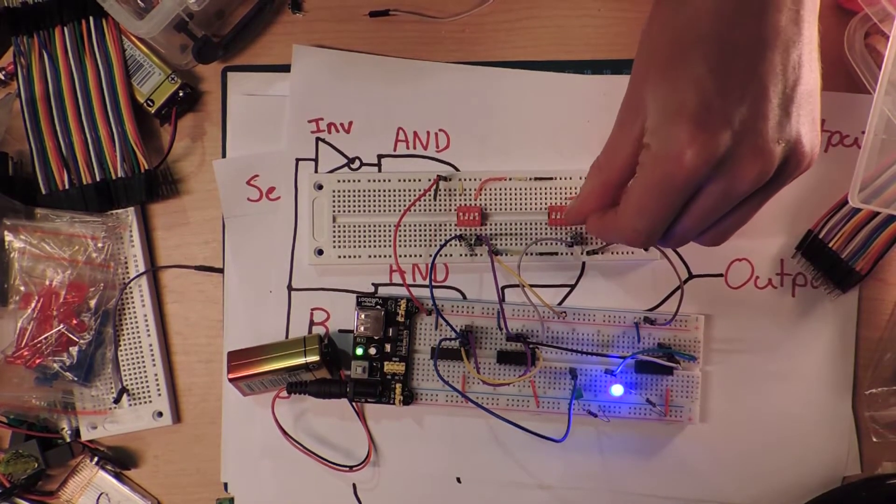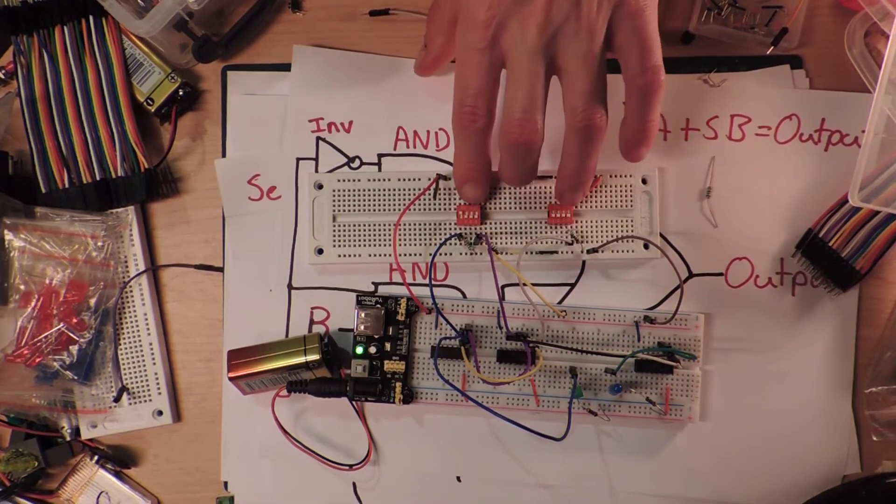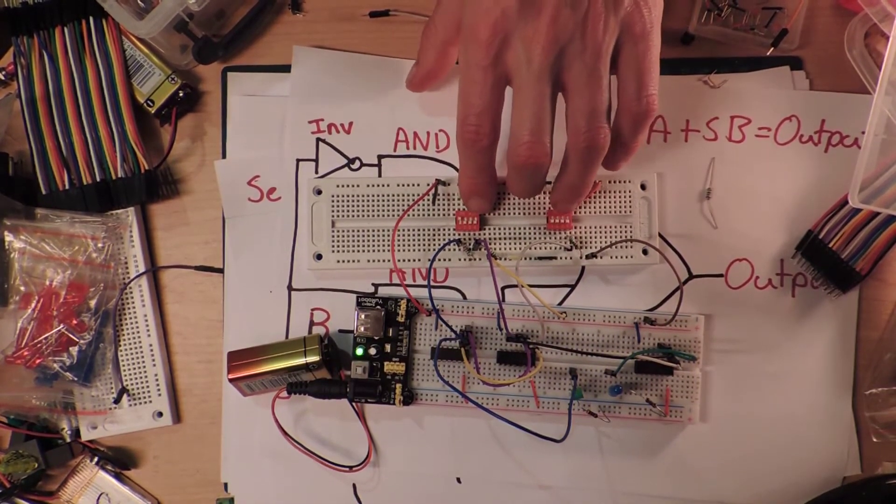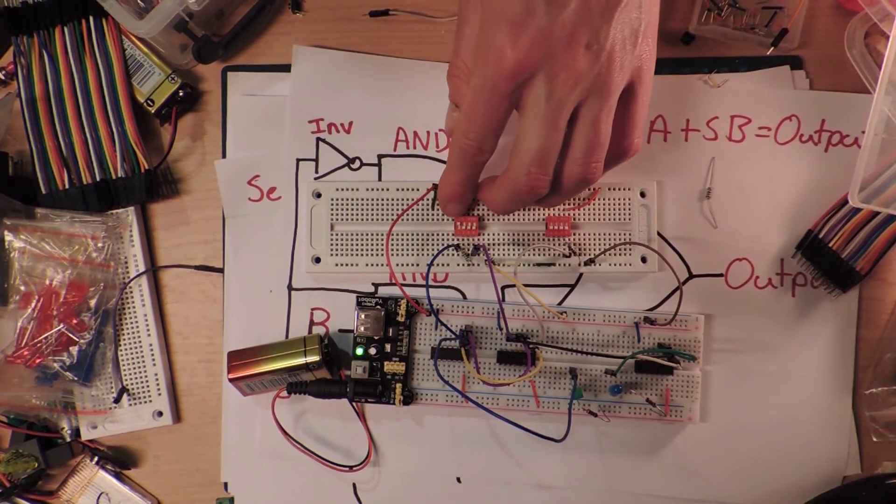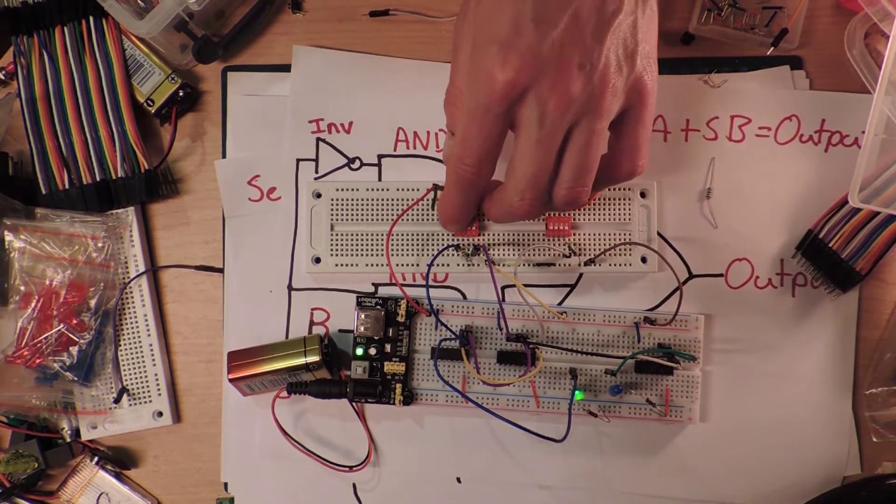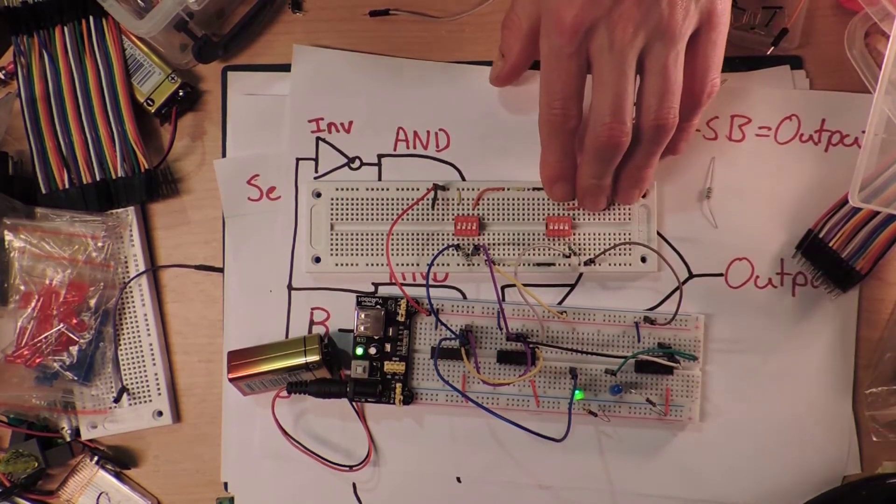And so right now if I turn both of them to low, so they're both being switched to low. Now if I switch the select output from being high to low, the green light comes on. I hope that comes up on the camera.